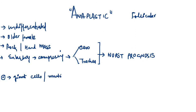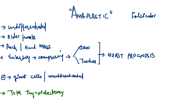Regarding treatment of anaplastic carcinoma, no modality of treatment is of proven use in this case, because anaplastic carcinoma is rapidly progressing and involving adjacent structures. However, for palliative purposes, we can perform total thyroidectomy. This is all about thyroid cancer. I hope you like these videos. Do make sure to subscribe to our YouTube channel.